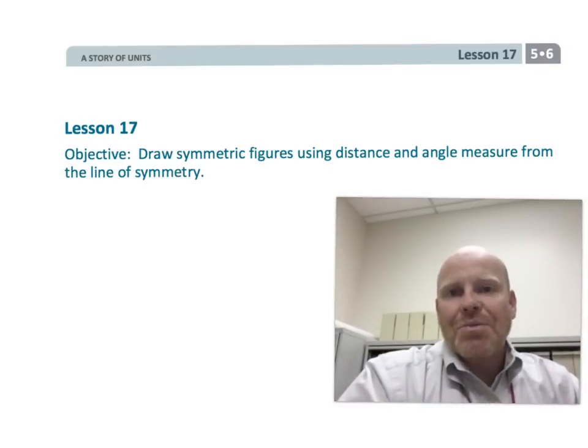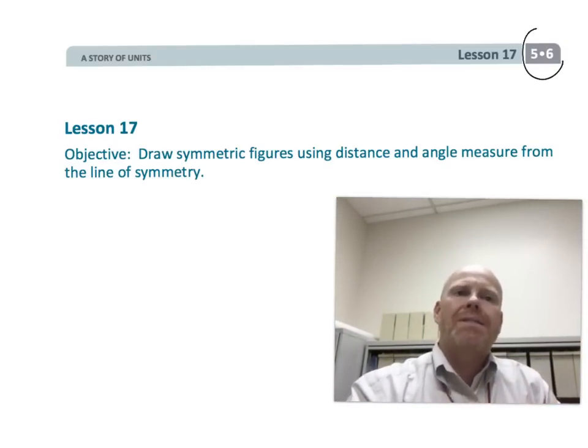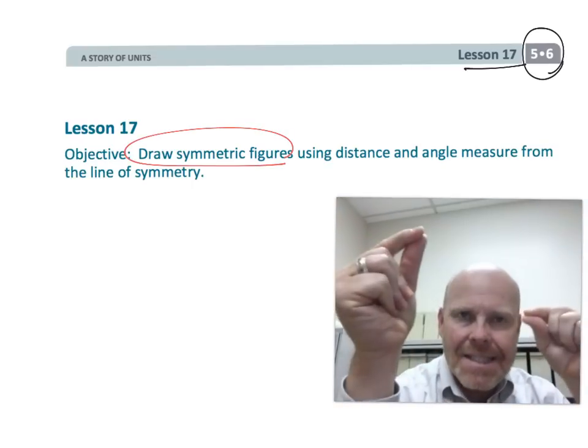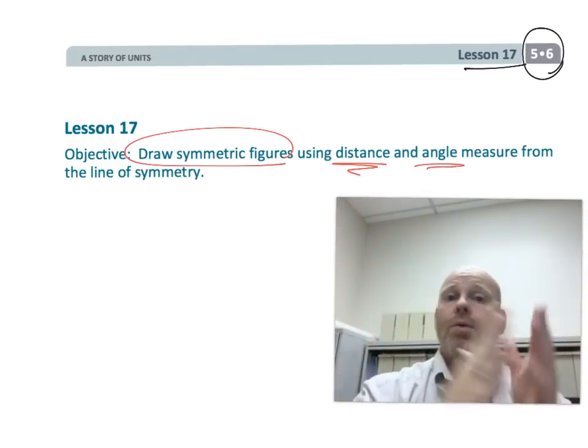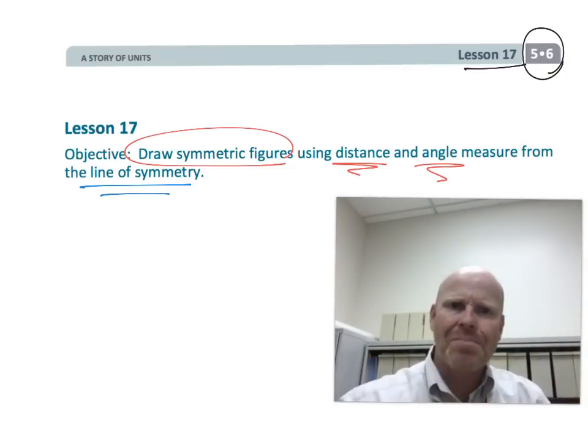All right, this is fifth grade module six lesson 17. In this lesson students are going to be drawing symmetric figures and they're going to be using the idea of distance and angle in order to create objects that are symmetrical. So let's get started.